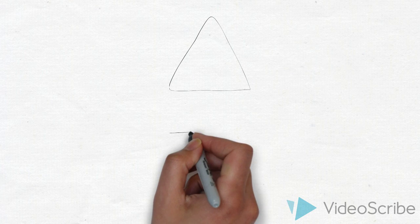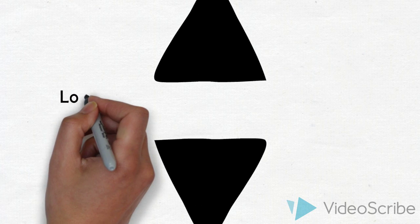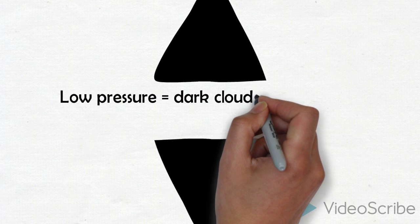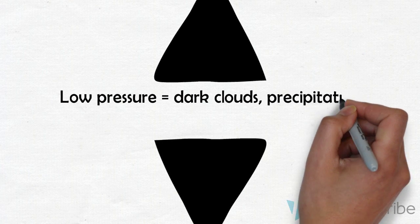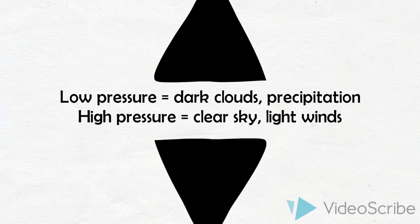Air pressure can help you to predict the weather because both high and low air pressure are associated with different types of weather. Low air pressure is associated with dark clouds and precipitation, and high air pressure is associated with clear skies and light wind.